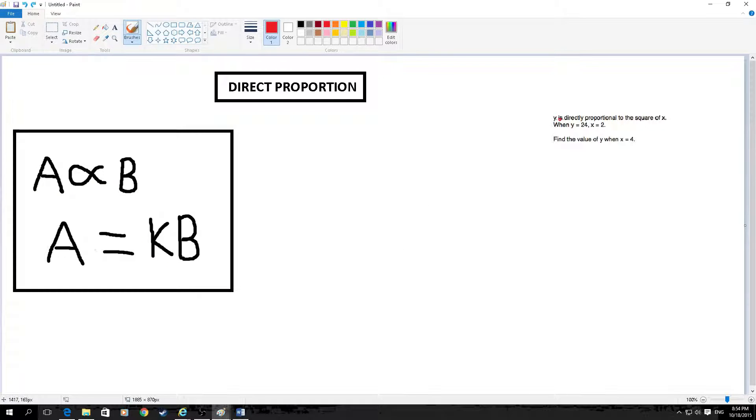So the question is here, y is directly proportional to the square of x. When y is 24, x is 2. Find the value of y when x is 4.